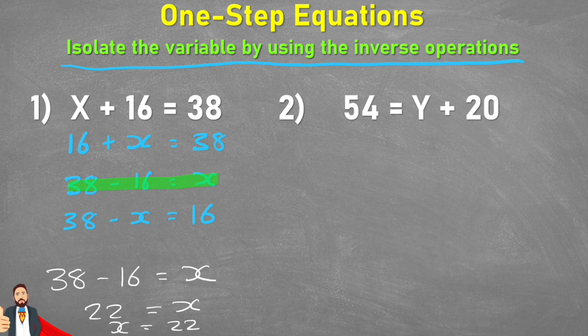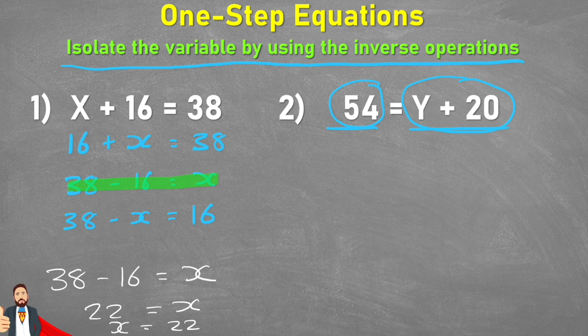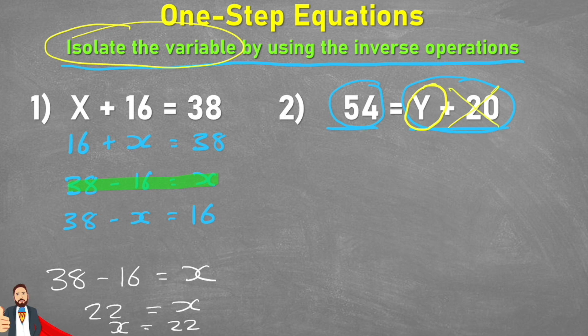That's one way of solving. For question two, we understand that everything on either side of the equal sign must have the same value. I'm trying to isolate the variable — get y on its own — and the only way to do that is by getting rid of the plus 20. But if I get rid of it on one side, I must also get rid of it on the other side.